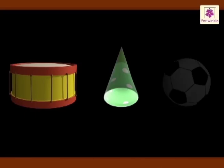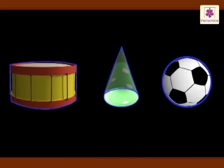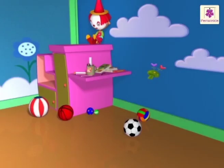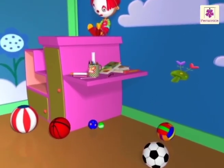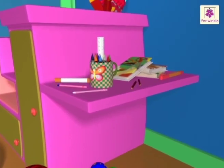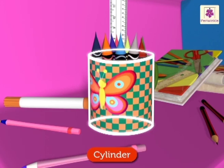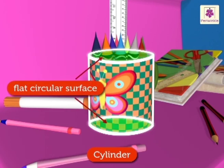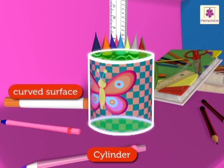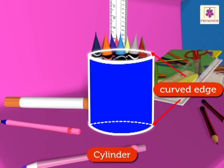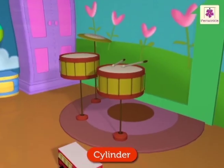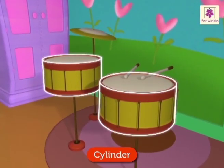The solid figures cylinder, cone, and sphere have a curved surface. Look, there is a mug full of crayons on the table — the mug is cylindrical in shape. A cylinder has two flat circular surfaces, one curved surface, and two curved edges. Come, let's play these drums — they are also cylindrical in shape.